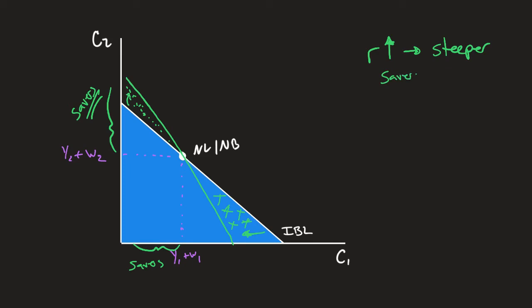So we have savers are better off, borrowers are worse off. And this should make sense intuitively. Higher interest rates, great for savers, bad for borrowers.